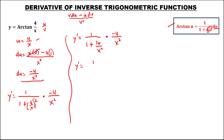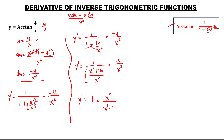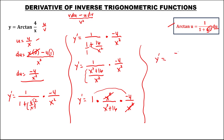Then to simplify, using the butterfly method — multiply — so this is x squared plus 16, over x squared, then times negative 4 over x squared. Then y prime equals 1 times the reciprocal of this denominator — this becomes x squared over x squared plus 16 — then times negative 4 over x squared. We can cancel now this x squared and multiply, so y prime equals negative 4 over x squared plus 16.